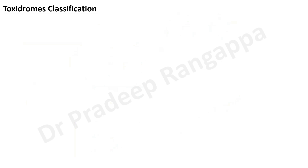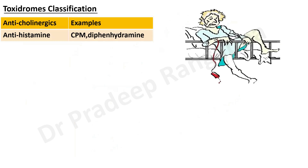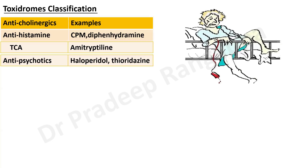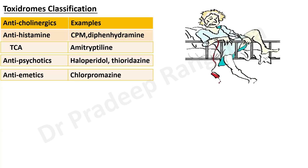Looking at the classification of drugs into five major categories — sedation, obtundation, agitation, involuntary movements, and seizures — one important category is anticholinergic drugs, which tend to cause delirium. Antihistamines such as chlorpheniramine maleate and diphenhydramine are important anticholinergic drugs that can lead to neurological manifestations, as can amitriptyline and antipsychotics like haloperidol and thioridazine, which we use frequently in the ICU.